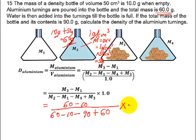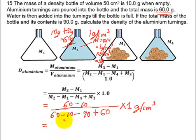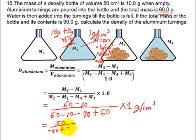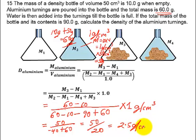All of this is multiplied by 1 gram per centimeters cubed, so the answer will have units of grams per centimeters cubed. Simplifying: 60 minus 10 is 50 in the numerator; 60 minus 10 is 50, then 50 minus 90 is minus 40, plus 60 gives 20 in the denominator. This gives us 50 over 20, which equals 2.5 grams per centimeters cubed. That is how we use the expression derived in question 13 to solve this question.